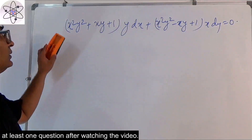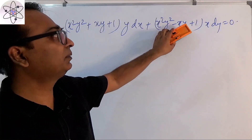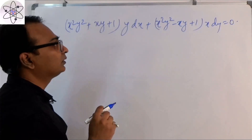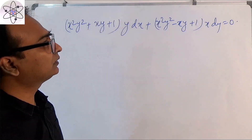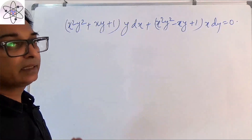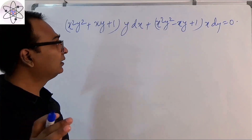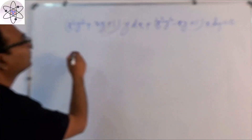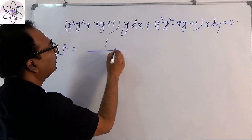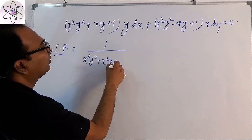Our second example is: (x²y² + xy + 1)·y dx + (x²y² - xy + 1)·x dy = 0. You should check whether it is in exact form or not — I leave that to the students to do by themselves. Let's start with finding the integrating factor.